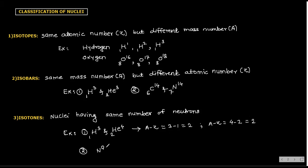A second example of isotones: nitrogen-17 (⁷N¹⁷) and oxygen-18 (⁸O¹⁸). For nitrogen: A − Z = 17 − 7 = 10. For oxygen: A − Z = 18 − 8 = 10. Same number of neutrons in both cases — so these are isotones.